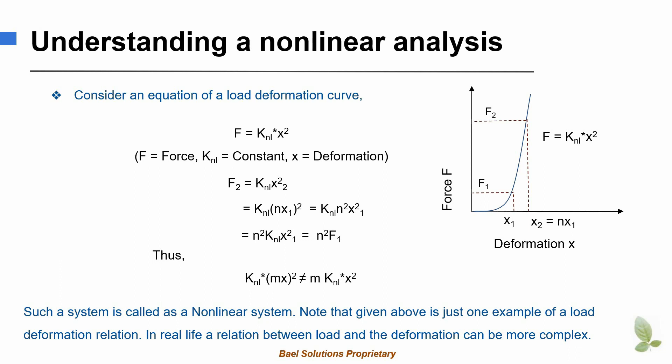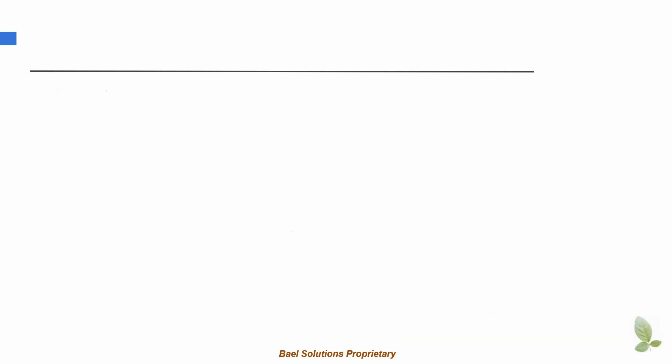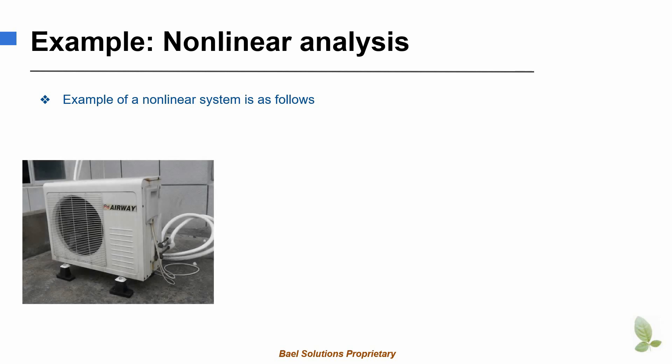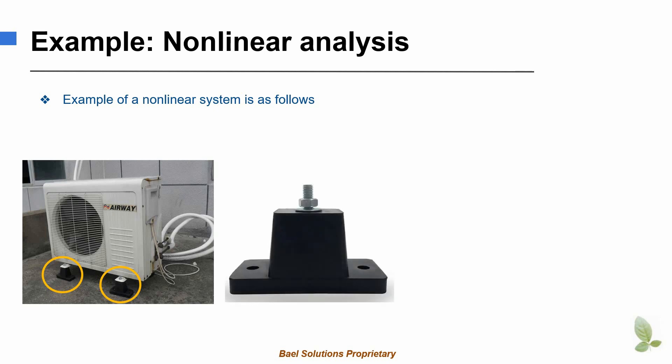Note that this is a simple example of a non-linear load-deformation relation. In real-life problems, the relationship between load and deformation can be far more complex. Now we are going to see an example of a non-linear structure. You can see a condenser of a split air conditioner mounted on rubber mounts in the picture. As we know, rubber is a highly non-linear material. To explain this better, see a rubber mount shown in the slide.